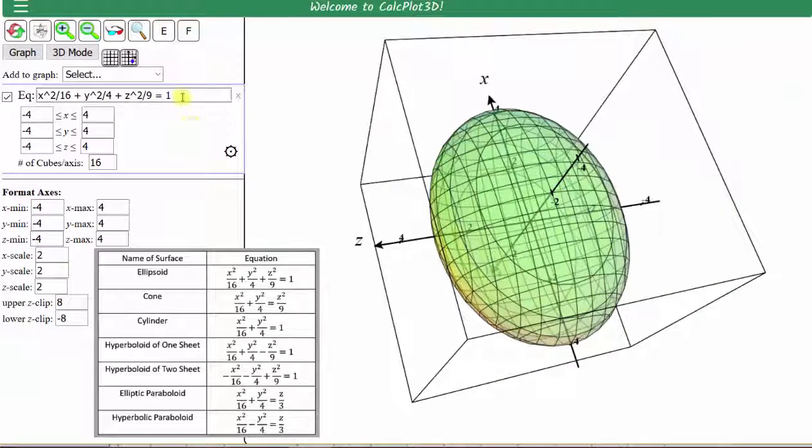And now let's graph the cone. The equation of the cone is x to the second divided by 16 plus y to the second divided by 4. So let's leave that part. And then we have equals z to the second divided by 9.